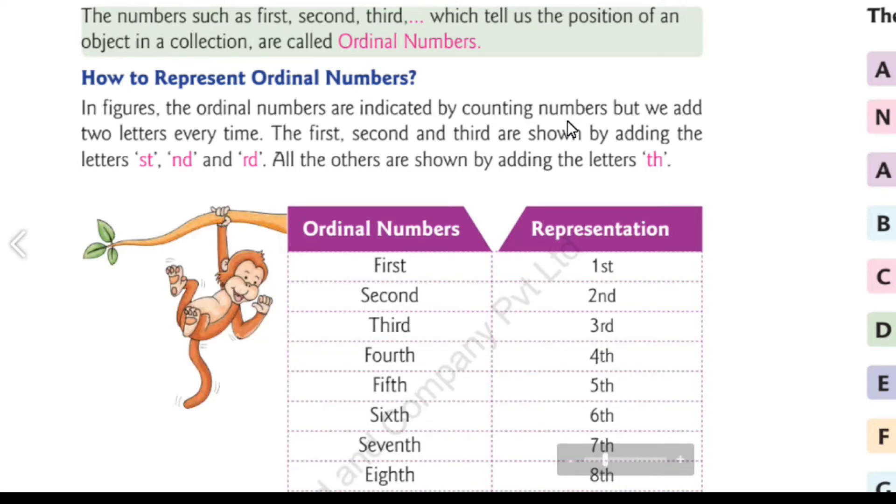So only if the number is ending with 1, that number and st will be the suffix. If the number is ending with 2, that number and nd suffix. The number is ending with 3, that number and rd are the suffix. Or 4, 5, 6, all other numbers which is ending with 4, 5, 6, 7, 8, 9 and then 0, then we can put th as the suffix.